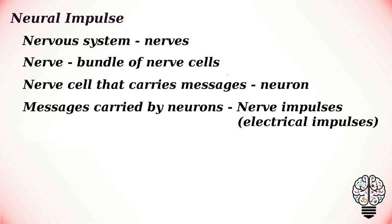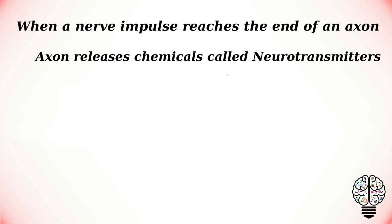The electricity flows to the light through wires inside the walls. The electricity may have to travel many meters to reach the light, but the light still comes on as soon as you flip the switch. Nerve impulses travel just as fast through the network of nerves inside the body.